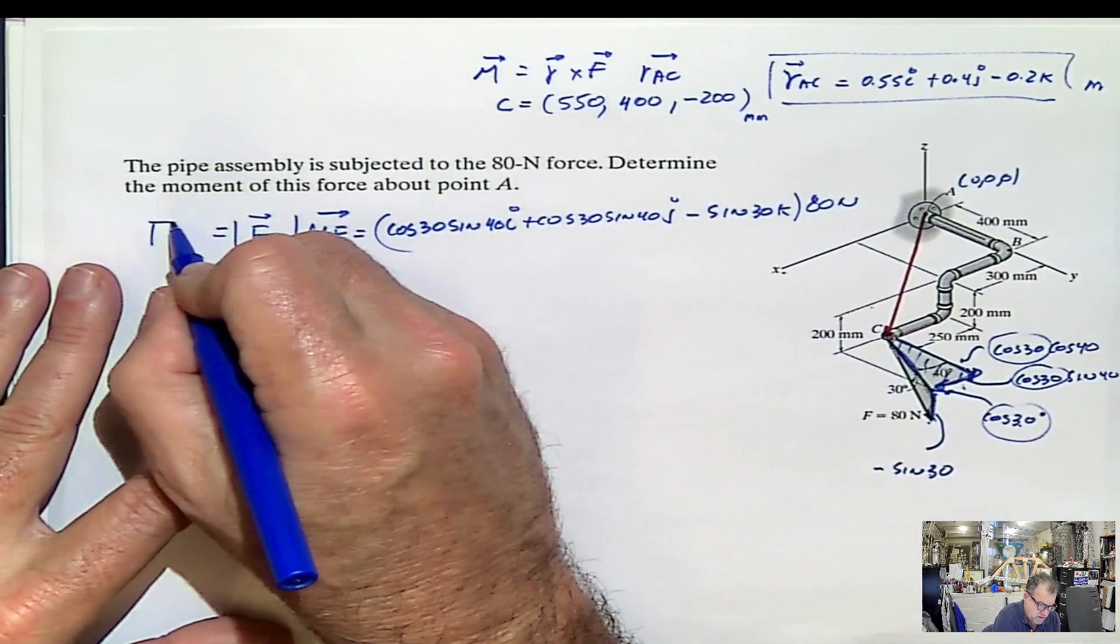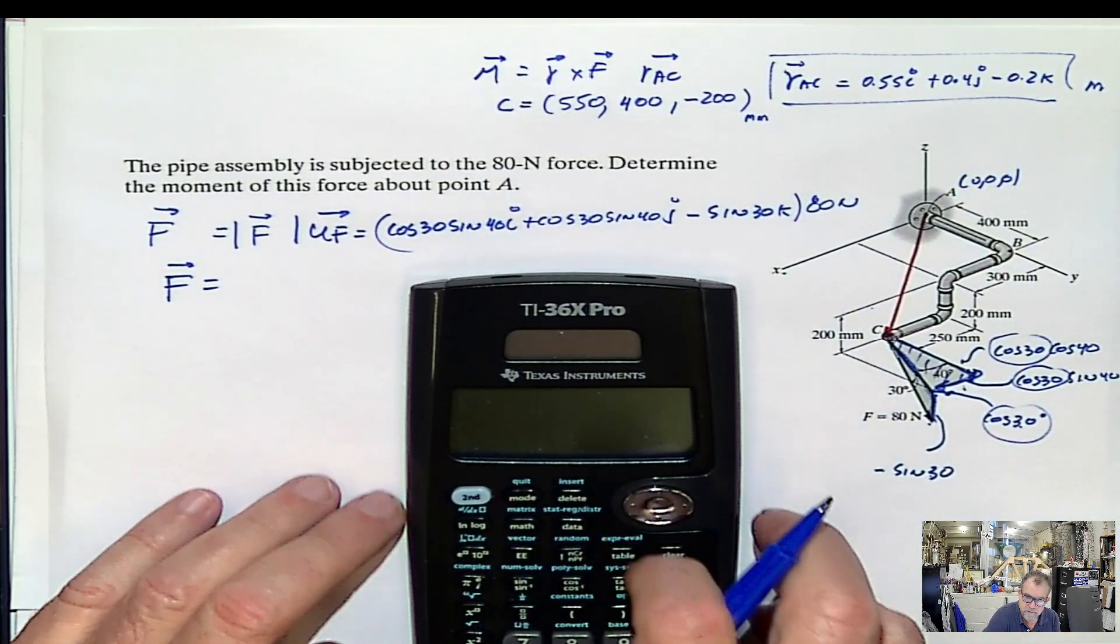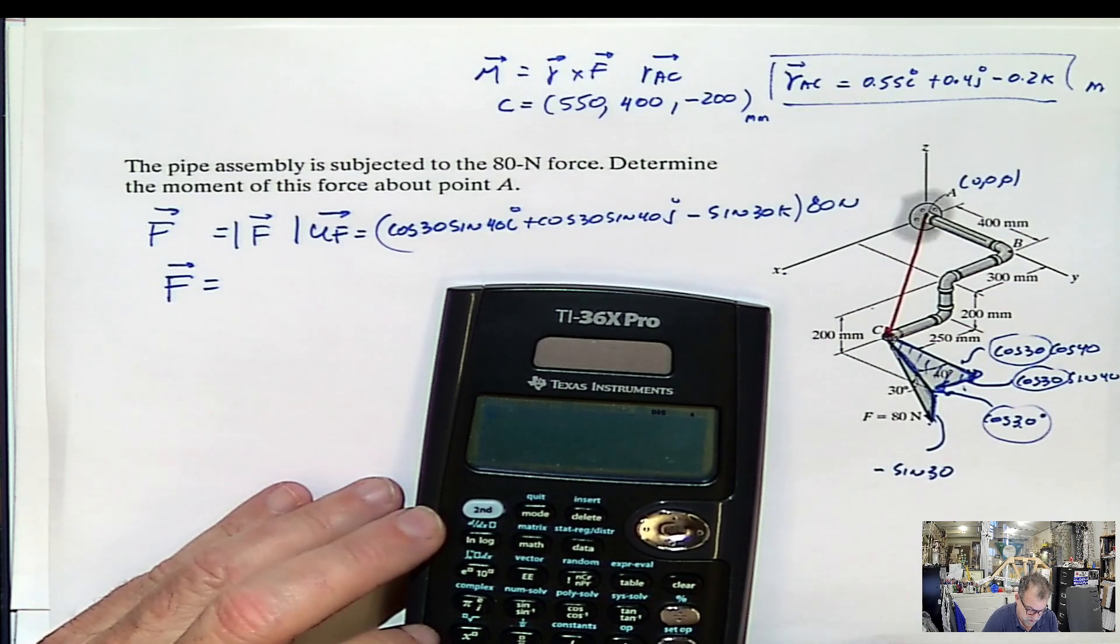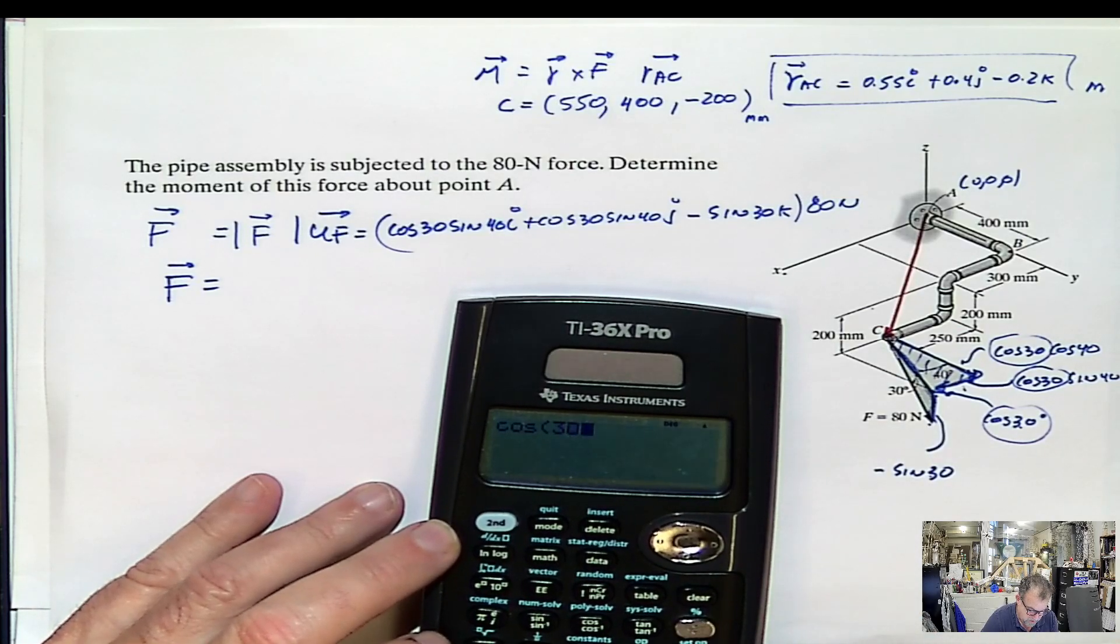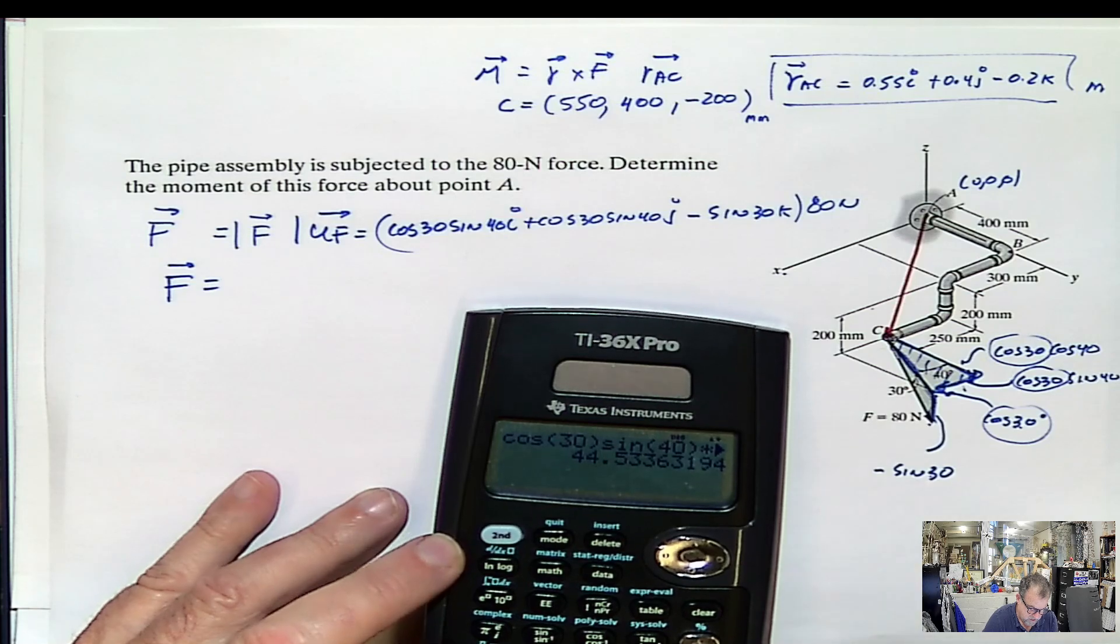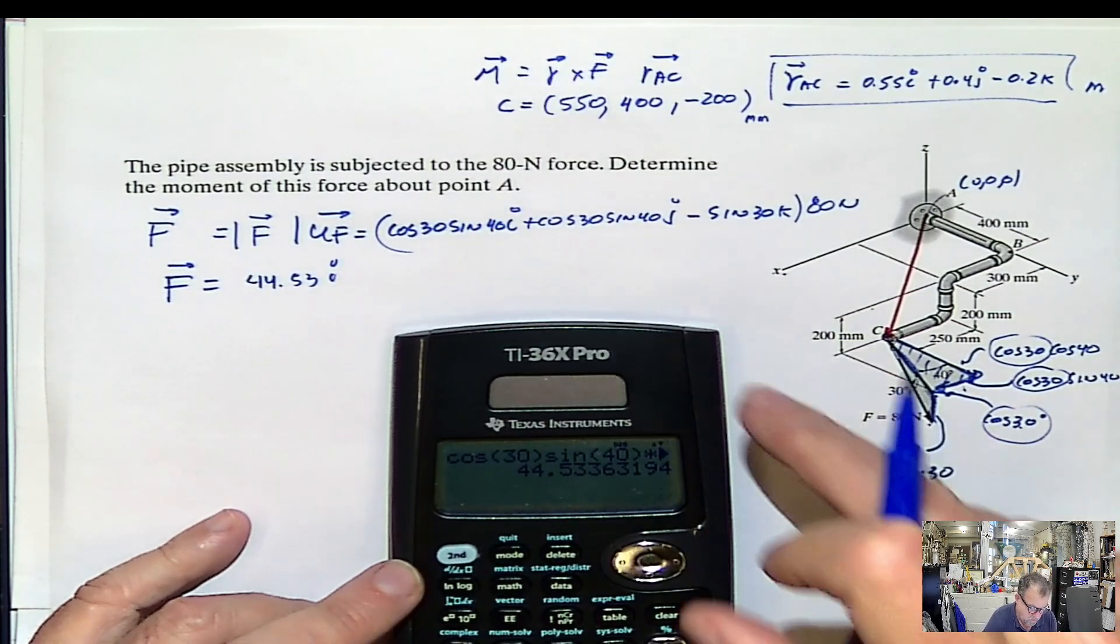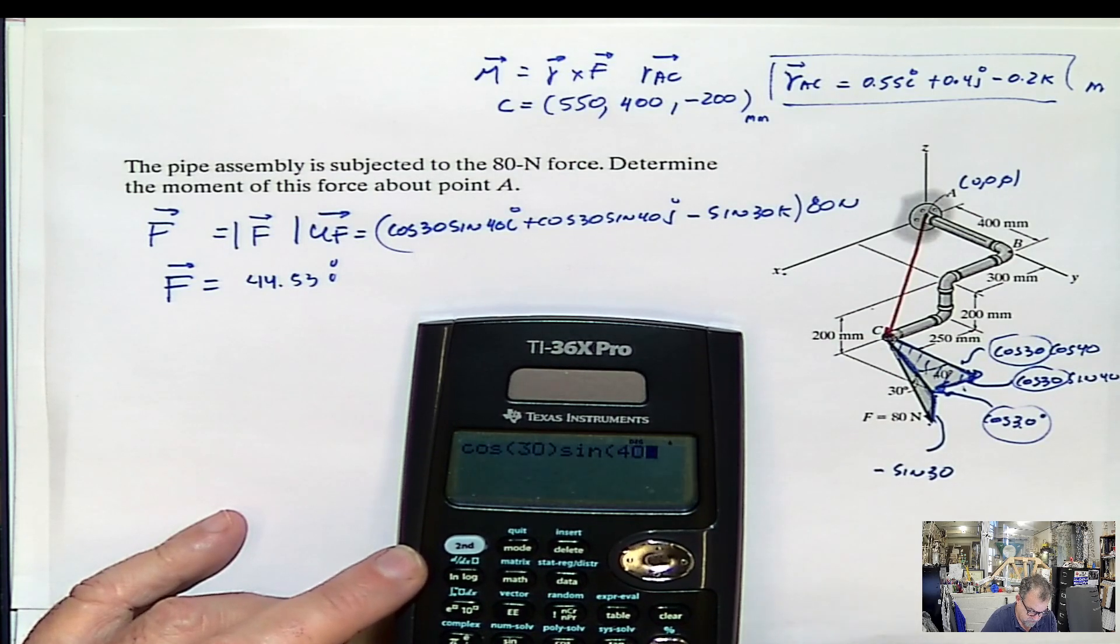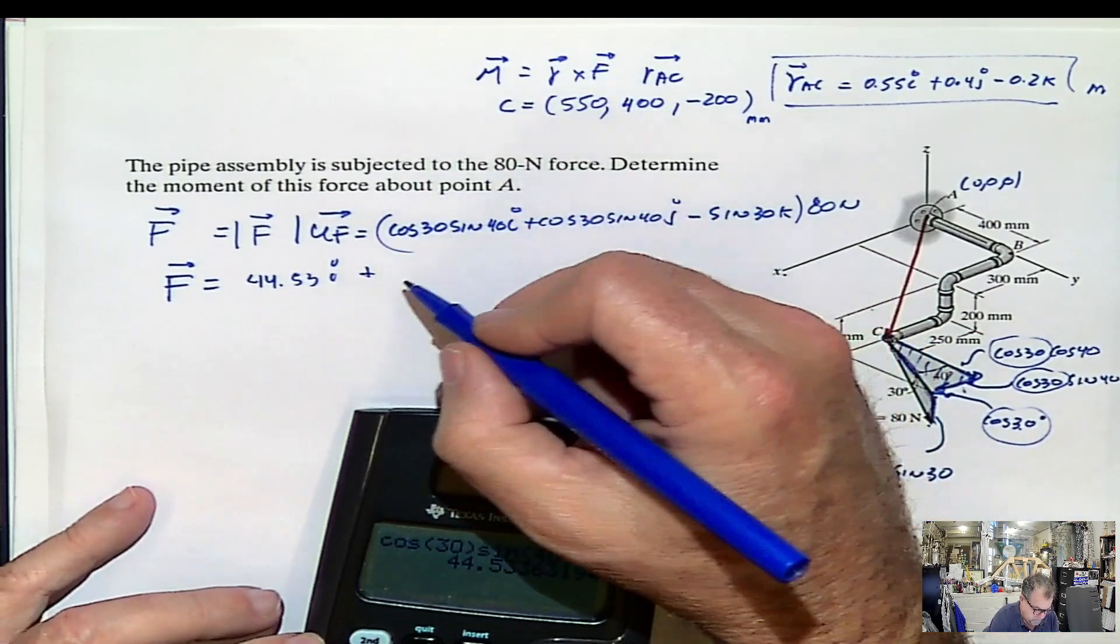And what do we get if we do that? We get the force expressed as a Cartesian. So our force expressed as a Cartesian will be cosine 30 sine 40 times 80. That would be the first value, 44.53. Now, cosine 30 sine 40 times 80. That would be this, 44, well, I did the same thing.